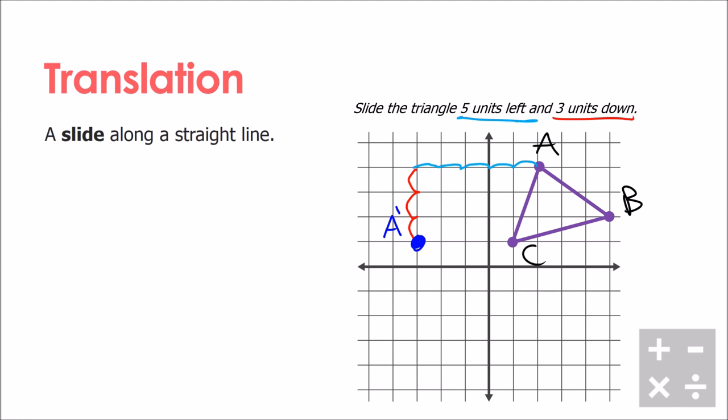Let's do the exact same thing for B and C. I want to go one, two, three, four, five and then I'm gonna go one, two, three down. This is gonna give me point B prime. And again for point C, one, two, three, four, five and then I'm gonna go three down, one, two, three. Put my point and I've got point C prime here.